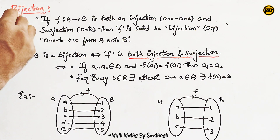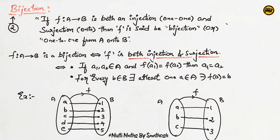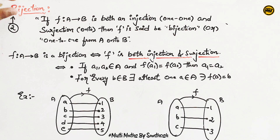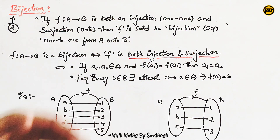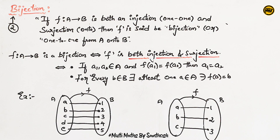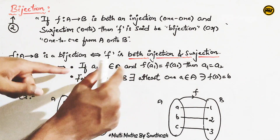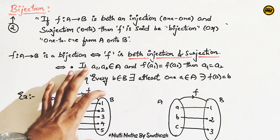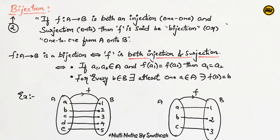A bijection means two conditions must be satisfied. One-one function means each element in the domain maps to a different element in the codomain — different inputs generate different outputs. And onto function means the range is equal to the codomain.